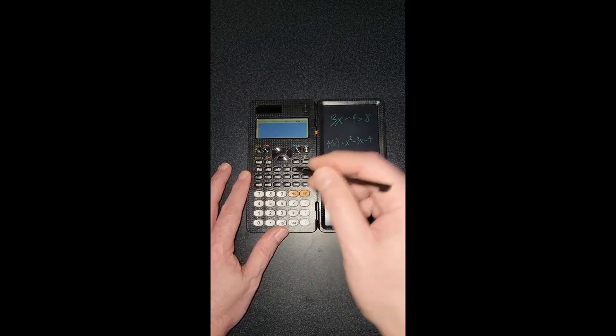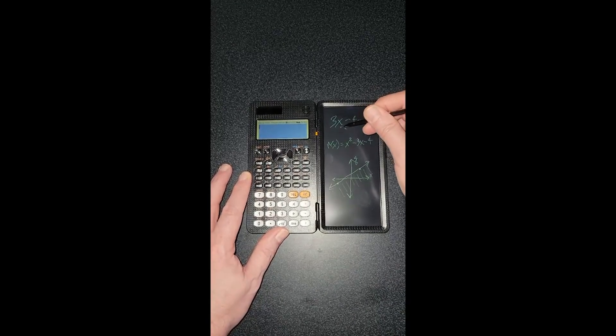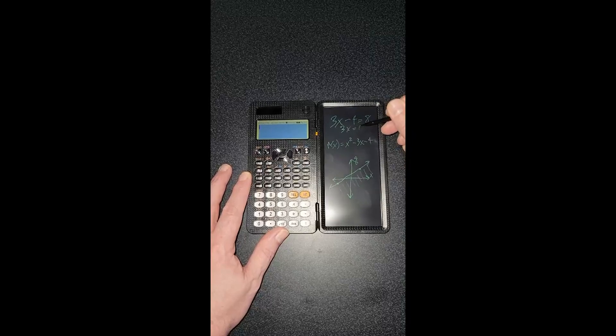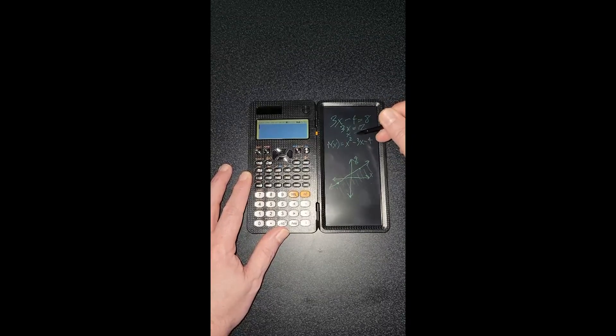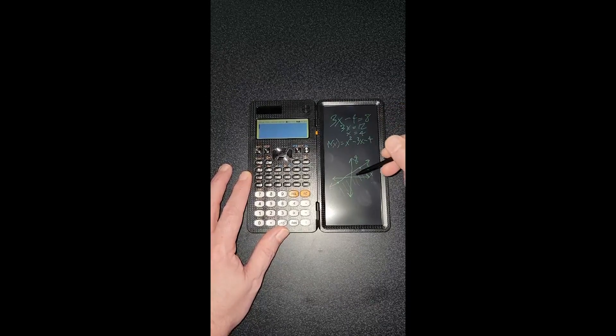And then you have to type it in on the other side and let the calculator do the calculations. You can show your work over here. You can say 3x equals 12, so x equals 4. You can write out functions, you can do a graph.